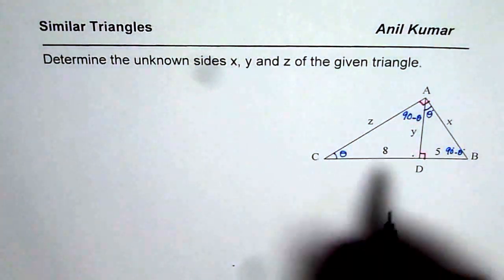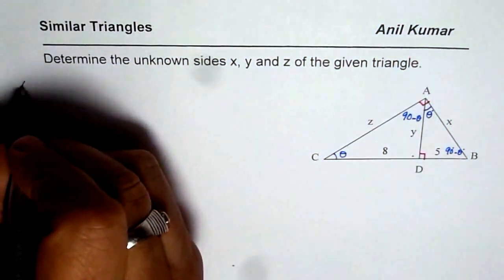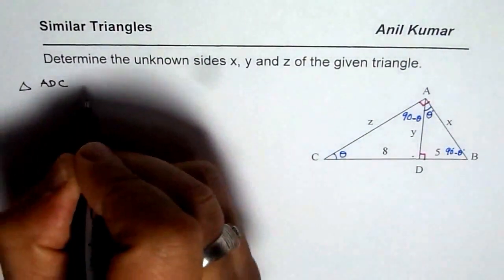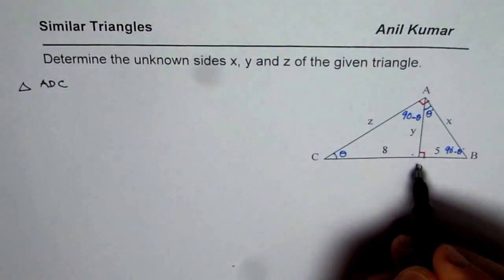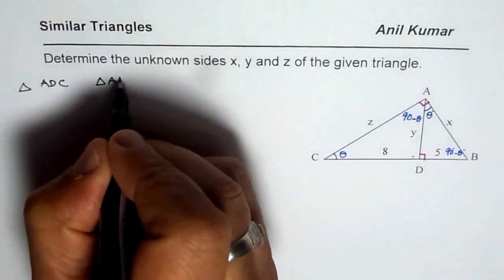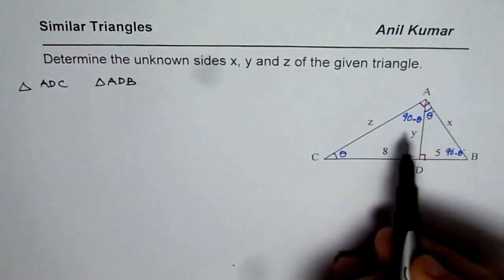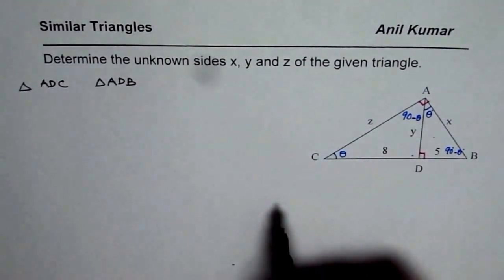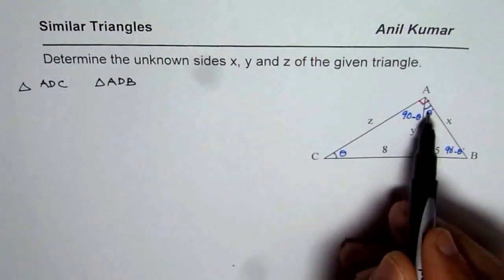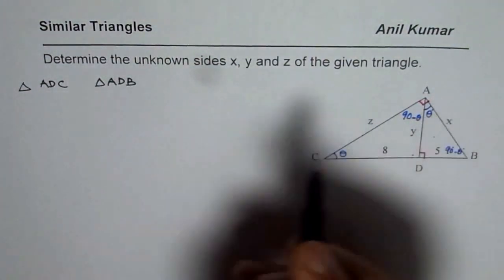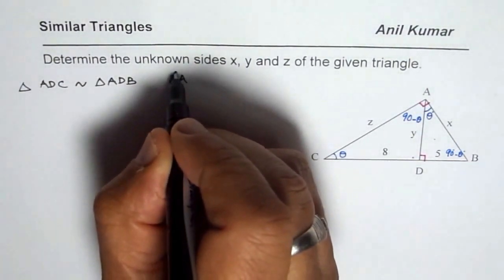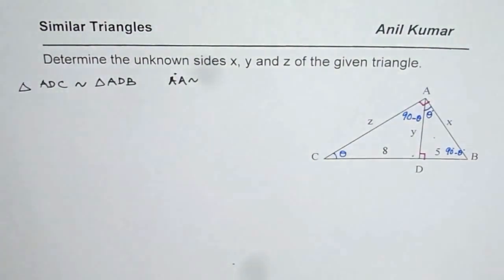Let us consider the triangles one by one. If I consider triangle ADC and triangle ADB, these two small triangles both have one 90 degrees and both have theta-theta angles, so they are similar. They are similar triangles because of the AA property.